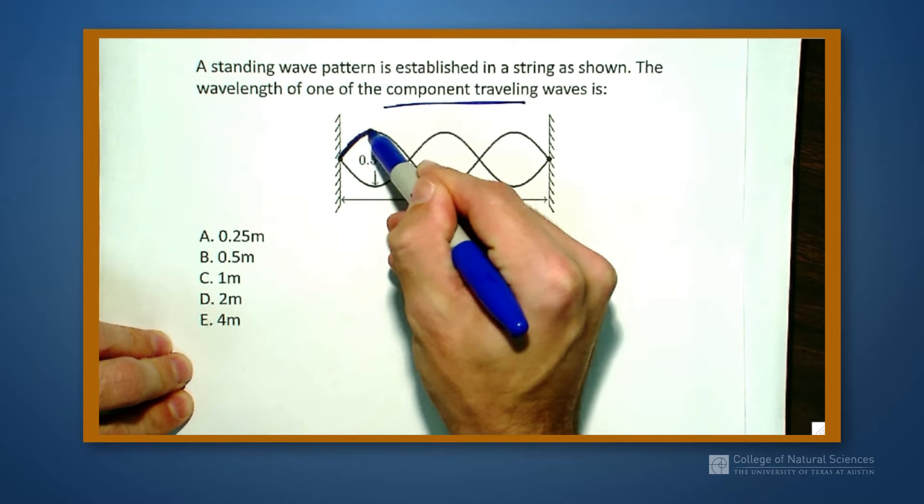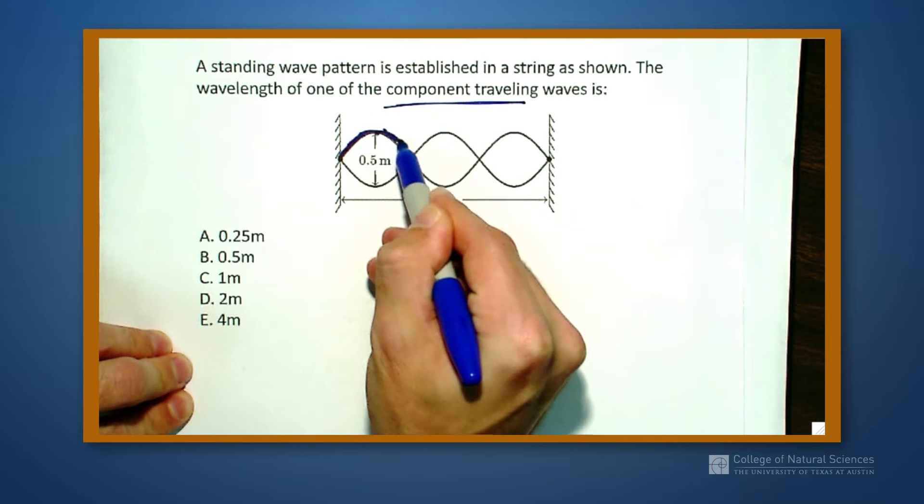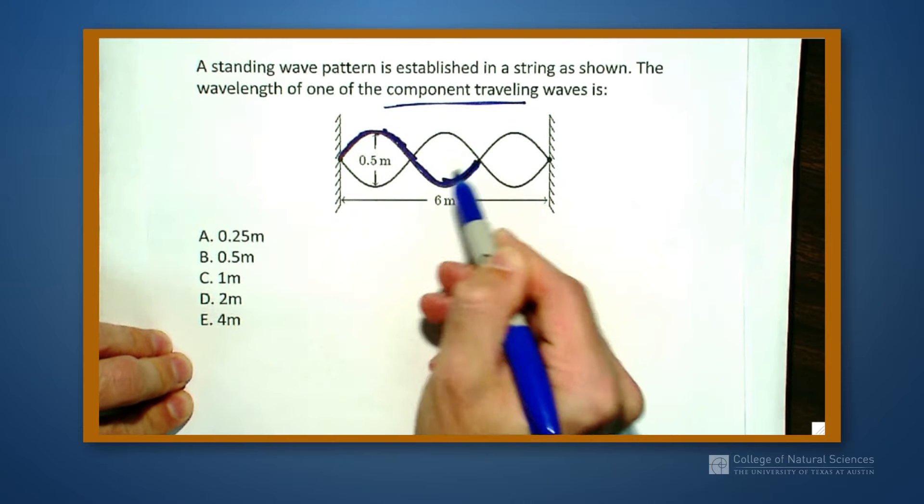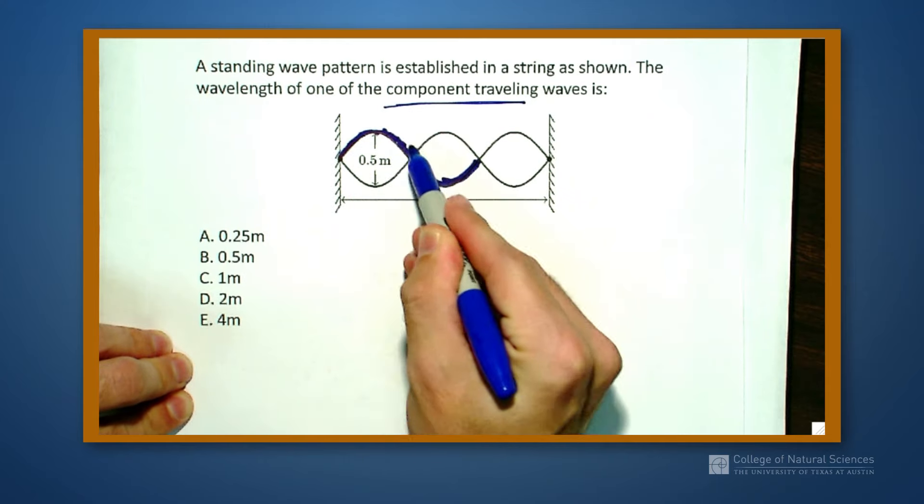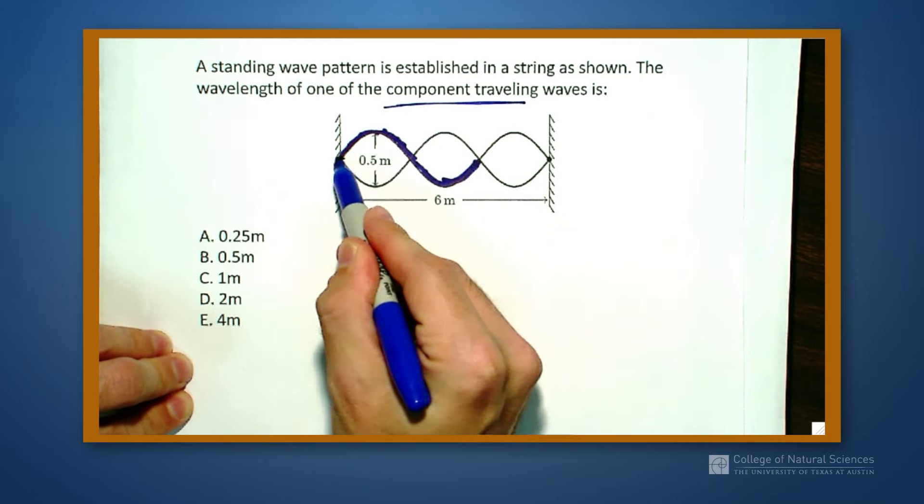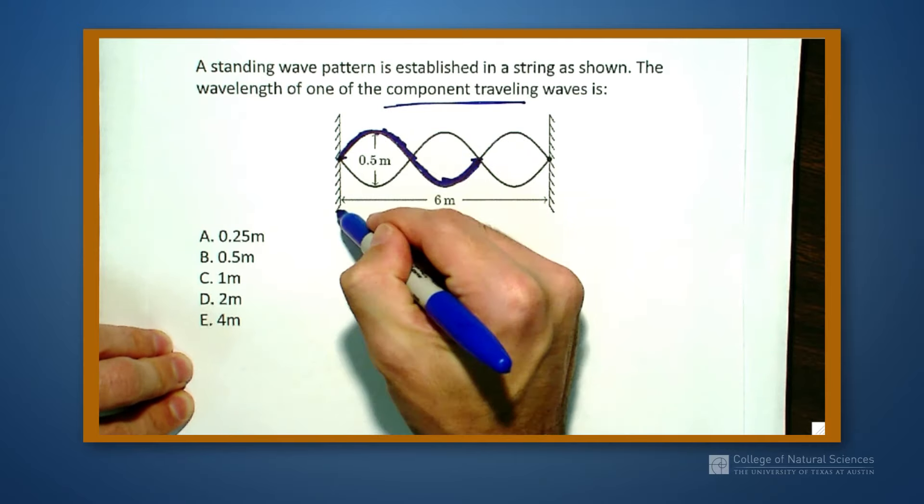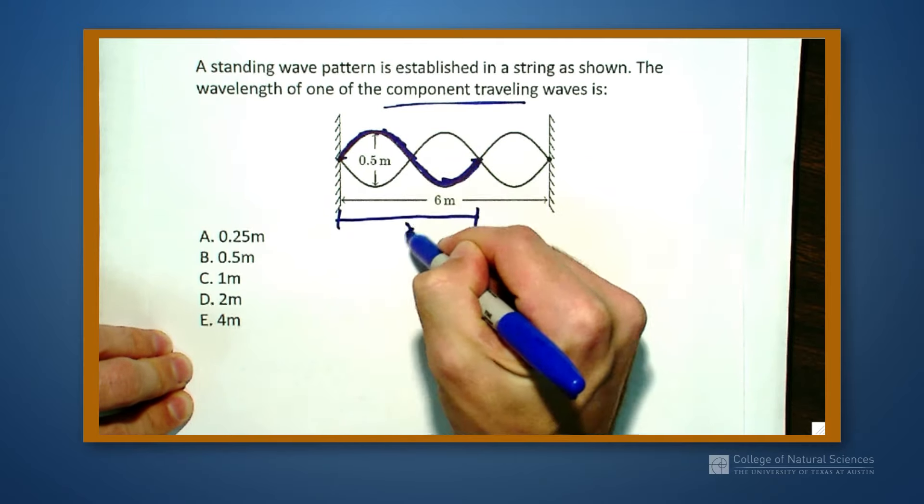Well, from the picture, if I were to highlight this little section right here, it goes up, down and back up, starts at the same spot that it ends at in terms of the cycle. So this length right here is one wavelength.